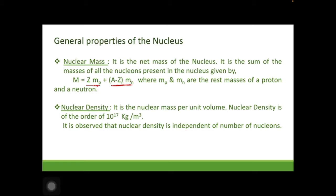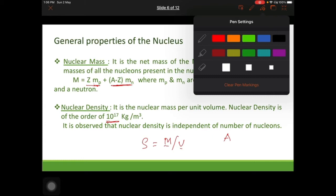Nuclear density is defined as mass per unit volume. The nuclear density is of the order of 10¹⁷ kg/m³, which is a very high quantity. Importantly, if you substitute the mass and volume of the nucleus, you observe that the nuclear density is independent of the mass number A — it is the same for all elements.